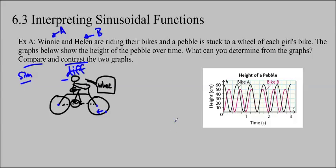Hello and welcome to Ms. Maul's grade 11 functions class. This is 6.3, interpreting sinusoidal functions. So let's start with an example. Winnie and Helen are riding their bikes and a pebble is stuck to a wheel of each girl's bike. The graphs below show the heights of the pebbles over time. What can you determine from the graphs? Compare and contrast.